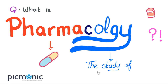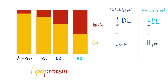What does pharmacology mean? It's the study of drugs, the study of medications. So what is a lipid? Lipid is fat. How about lipoproteins? Fat and proteins. And we have four types: chylomicrons, very low-density lipoprotein, low-density lipoprotein, and high-density lipoprotein.